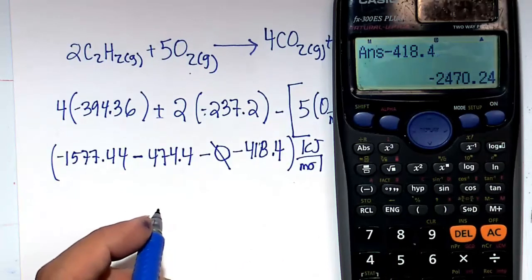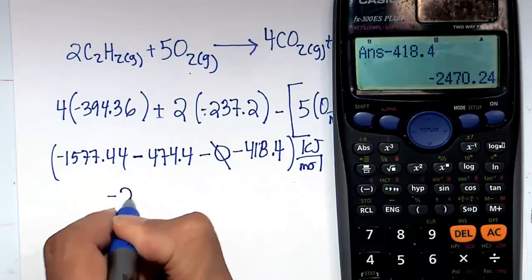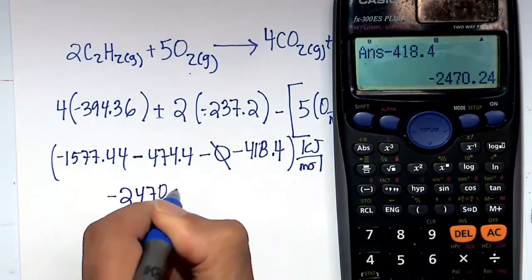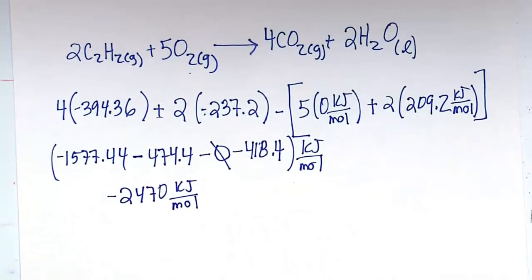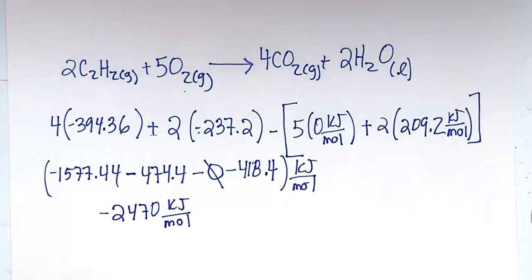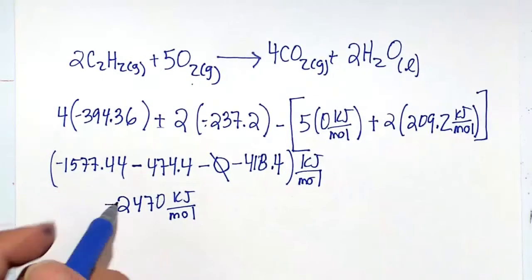So minus 1577.44 minus 474.4 equals that minus 0, and that is minus 418.4, and we're getting something around the order of minus 2,470 kilojoules per mole. And this is a reaction that is good to go. By good to go, meaning the negative sign tells us that this is exergonic, and as all combustion reactions do, they proceed spontaneously towards the products.